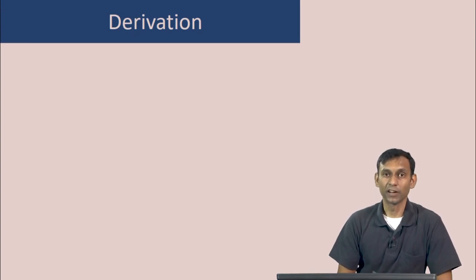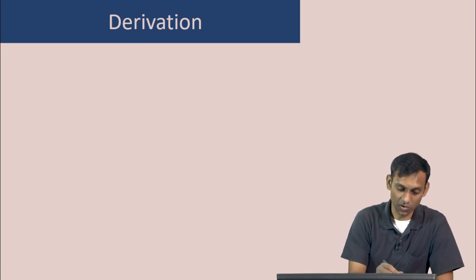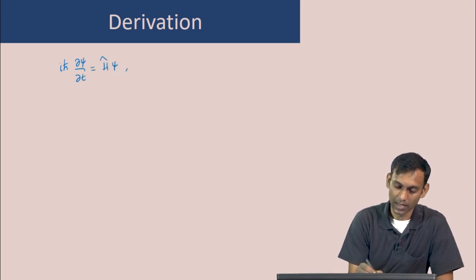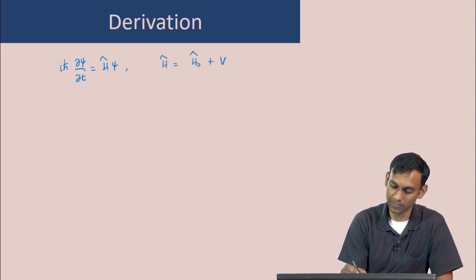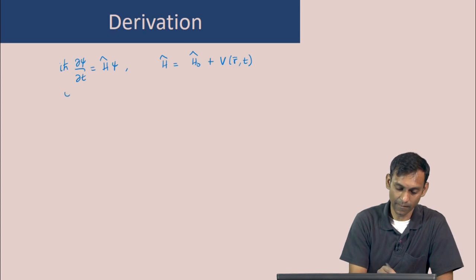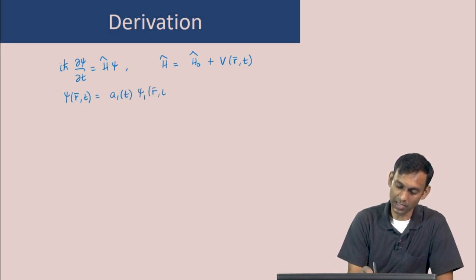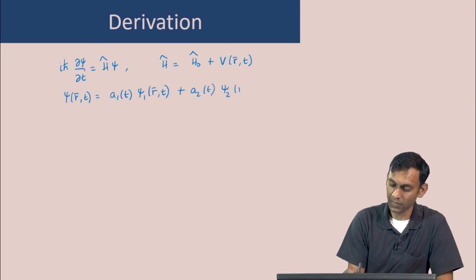To obtain the expressions for a1 and a2, let us now substitute the form of psi into the Schrödinger equation. The Schrödinger equation is iℏ ∂ψ/∂t = Hψ, where H = H₀ + V(r,t), and ψ is a function of r and t, which is a1(t)ψ1(r,t) plus a2(t)ψ2(r,t).